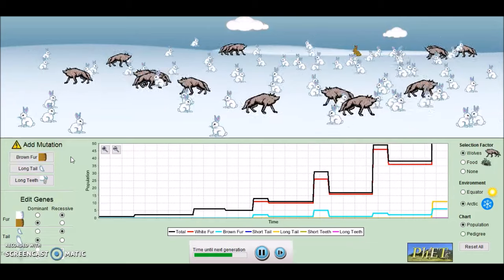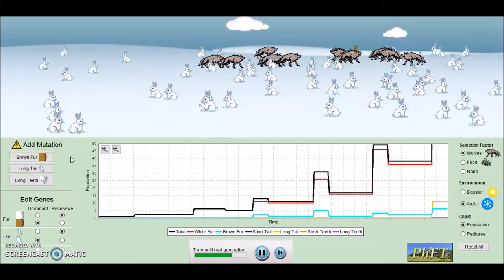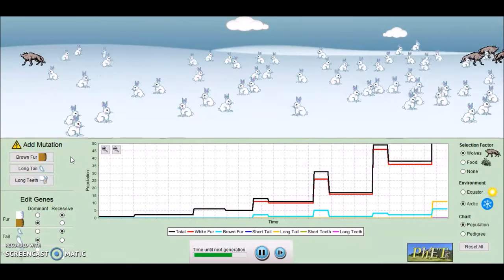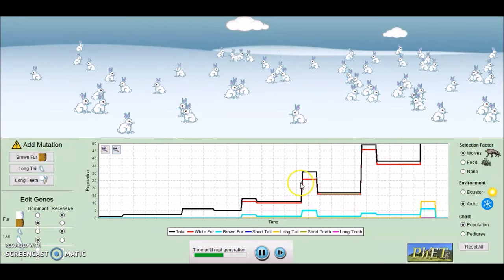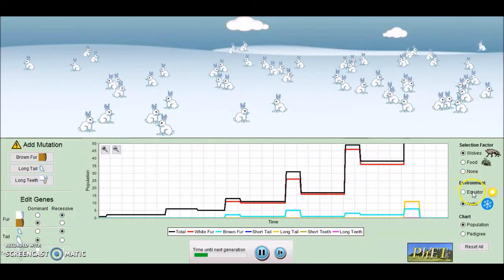So you can see the wolves are coming along and picking off all of the poor little bunnies with the brown fur. And the bunnies with the white fur are coming along quite nicely.